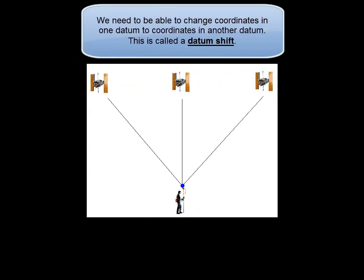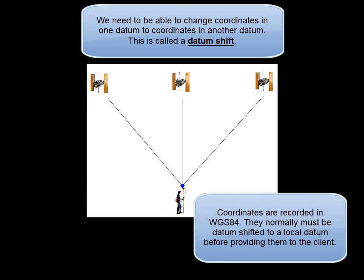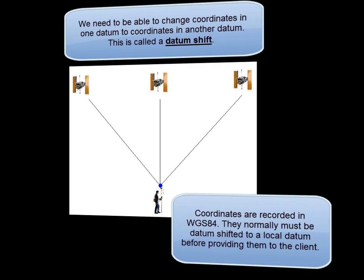However, the client will normally want the geographic coordinates in the local or regional datum. You'll be able to accomplish this conversion using one of several published mathematical transformations called datum shifts.